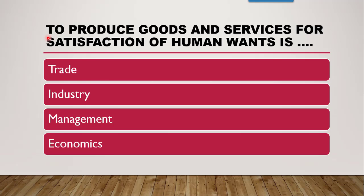The next question is: to produce goods and services for satisfaction of human wants is — whether it is trade, industry, management, or economics. The correct answer is industry, because trade deals with buying and selling, not producing. Management deals with coordinating. Economics is the study of man's behaviour towards earning. Industry is involved in the production of goods and services, so the correct answer is industry.